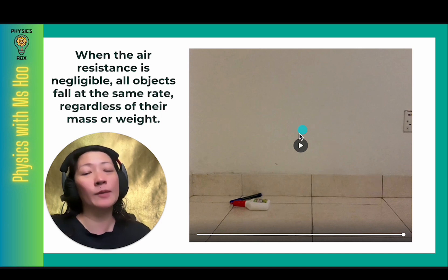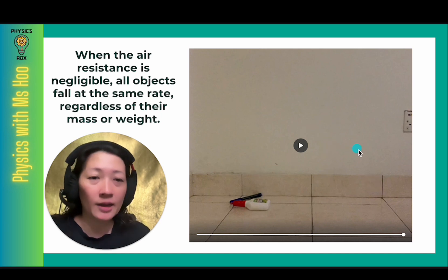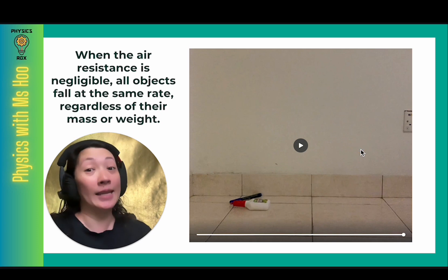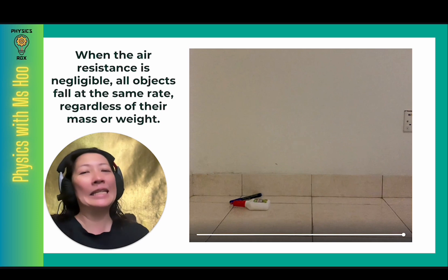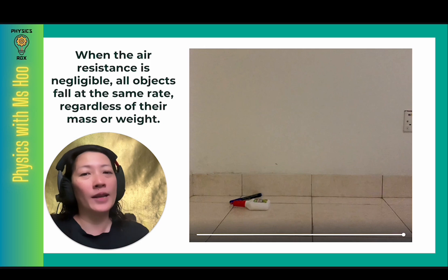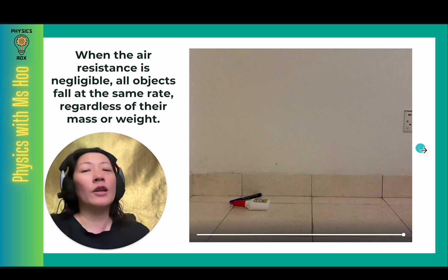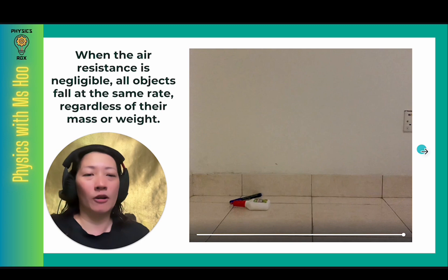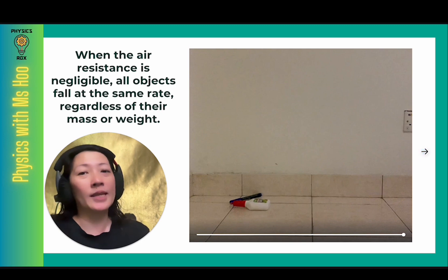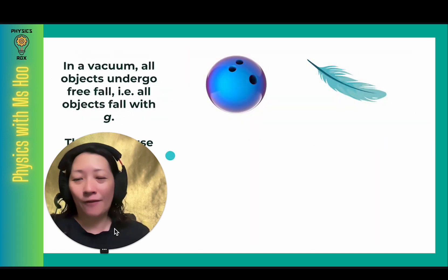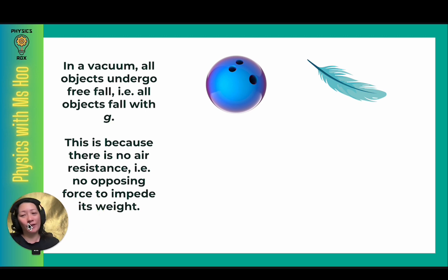In this case, both objects are not exactly free-falling because although the air resistance is negligible, there is still a little bit of influence where the objects fall at a rate slightly less than the gravitational acceleration. So if we truly want to observe free-falling objects, we would have to drop the objects in a vacuum. Unfortunately, I do not have a video of objects falling in a vacuum chamber because I do not own a vacuum chamber or a vacuum tube.